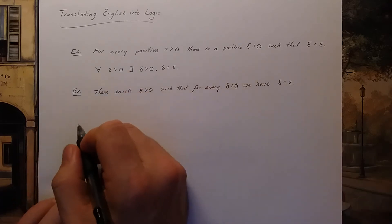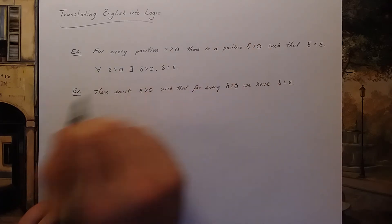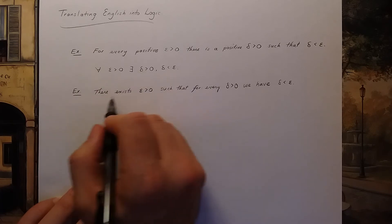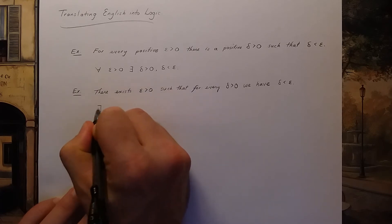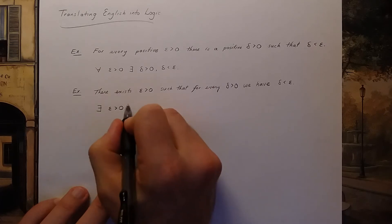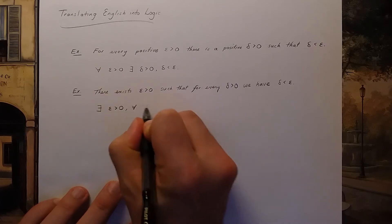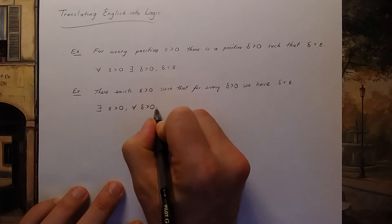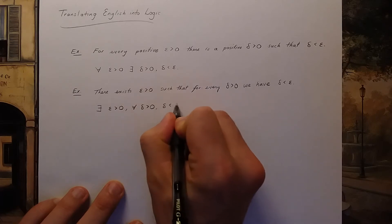So this happens to be a false statement but it's still a statement. If I were going to write this using logic symbols I would say there exists an epsilon bigger than zero such that for every delta bigger than zero we have delta is less than epsilon.